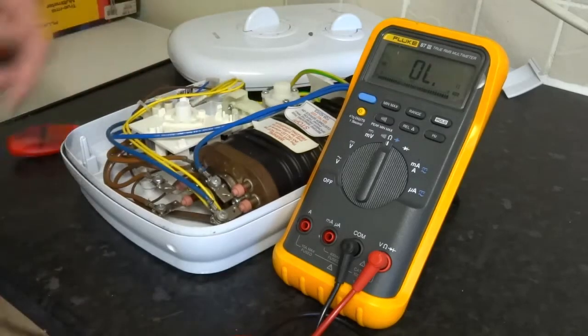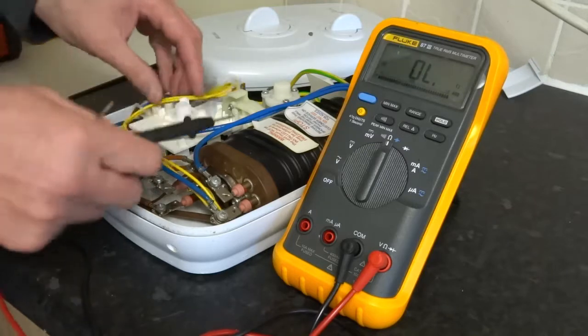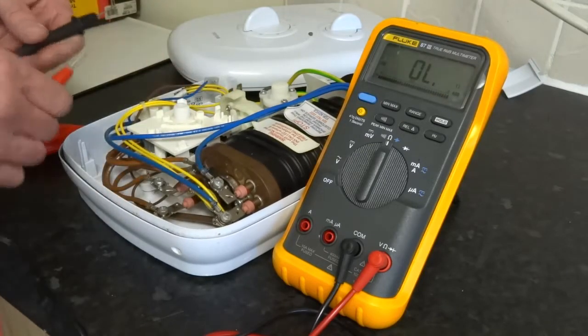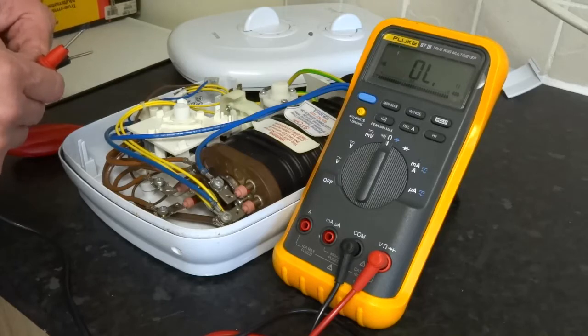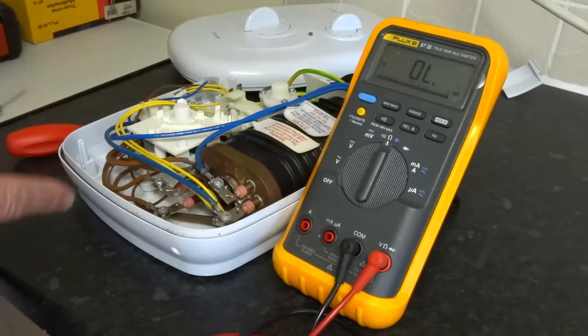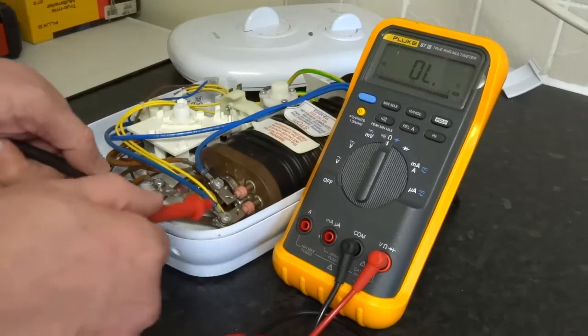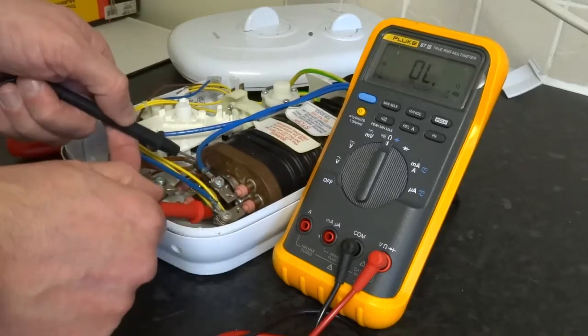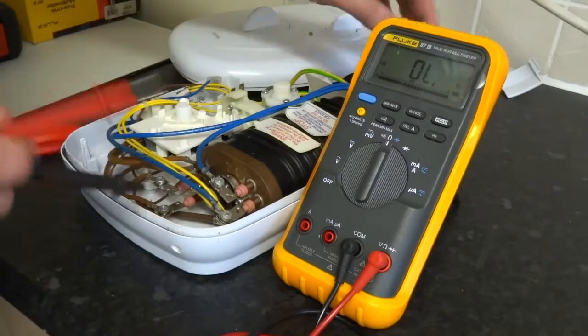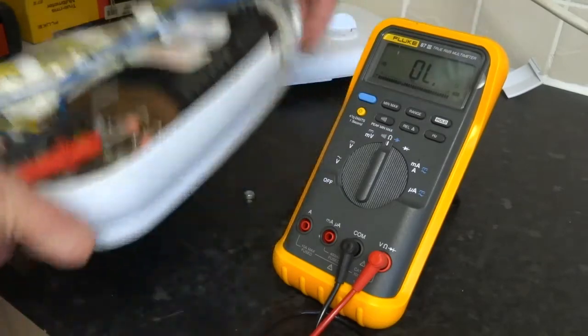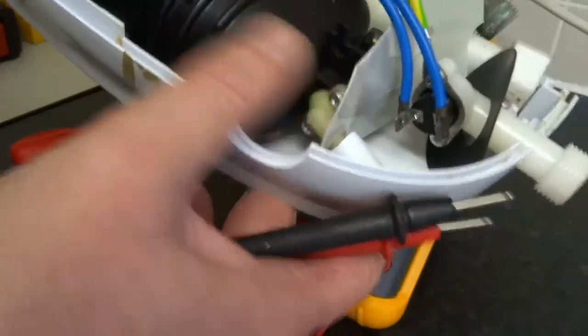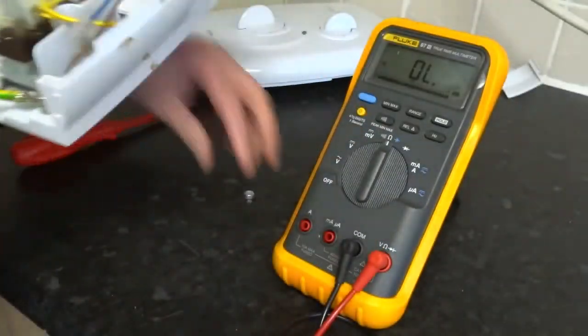And then just check your switches there. You need to take this cover off to get to your switches. So basically that's all the electrical tests you need to do anyway. Two elements, thermal cutout, thermal cutout on the bottom. And also on this one, you've got a pressure relief valve there. So it's built into your heater can. So that's it. I'll just carry on stripping it.